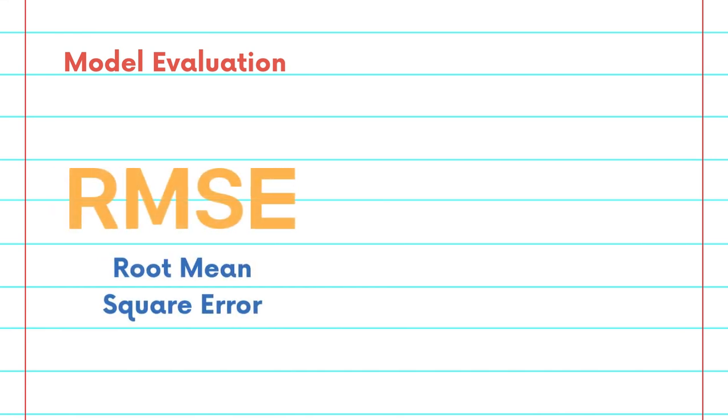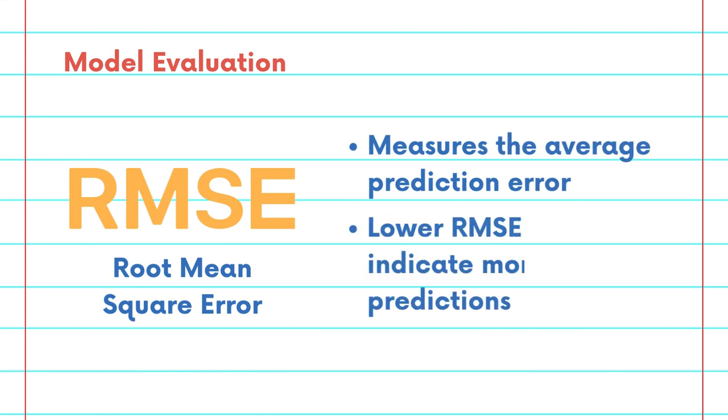So now let's talk about model evaluation. There are two popular metrics for evaluating a linear regression model. The first is root mean squared error (RMSE), which measures the average prediction error. A lower RMSE value indicates a more accurate prediction.